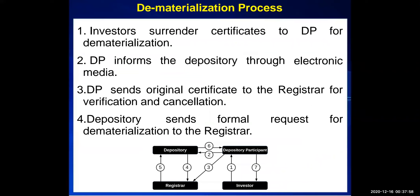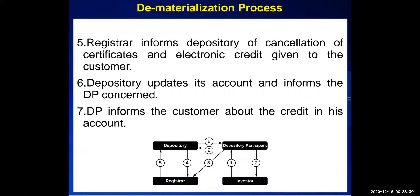In the dematerialization process, the first step is the investor surrenders the certificate to the DP (depository participant) for dematerialization. The DP informs the depository through electronic media. The DP sends the original certificate to the registrar for verification or cancellation. The depository sends a formal request for dematerialization to the registrar.